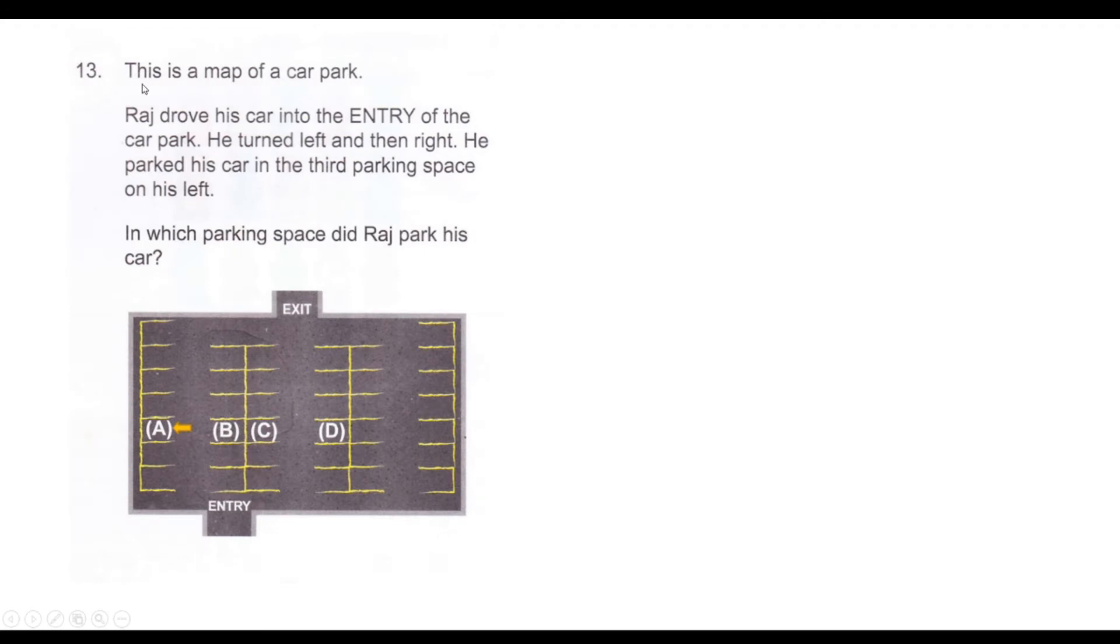This is a map of a car park. Raj drove his car into the entry. He turned left and then right. As he enters, he turns left, then he turns right, and then third left, which is nothing but A. So our answer is option A.